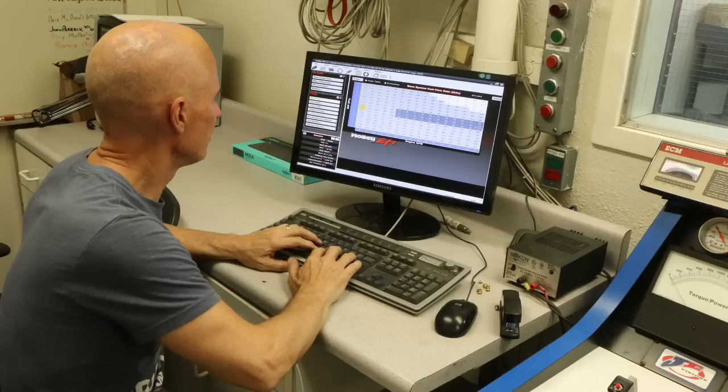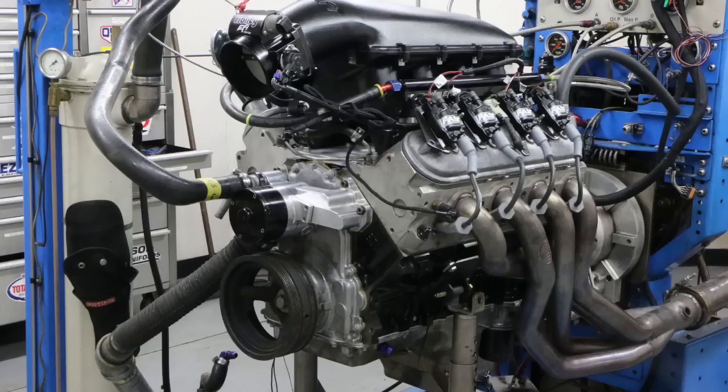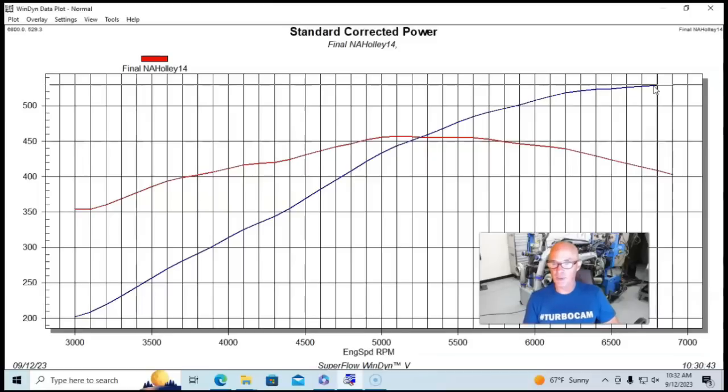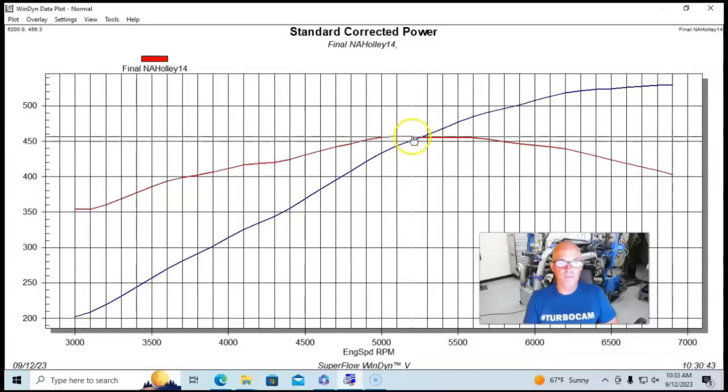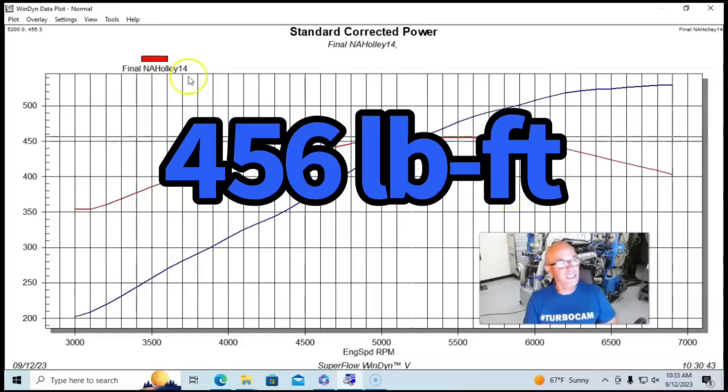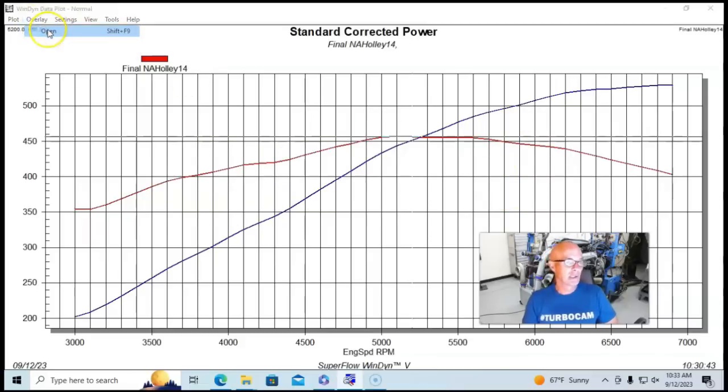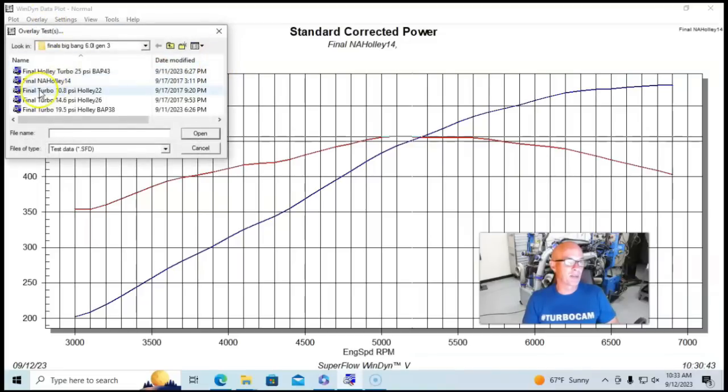This was our baseline, basically, again, Holley HP management system. And run with the ported 317 heads and the BTR Stage 3 turbo cam, this thing made 530 horsepower and 456 foot pounds of torque. And we can take a look and see what happened once we started adding boost to this thing.